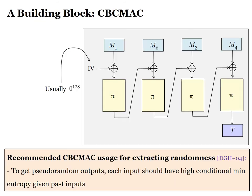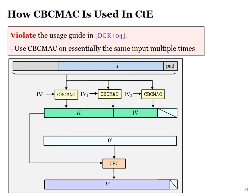As mentioned earlier, CTE is based on CBC-MAC as a building block. Conventionally, CBC-MAC uses the zero IV, but in CTE the IV is non-zero. A classical guide for using CBC-MAC as a randomness extractor comes from the work of Dodis et al. In particular, if you want pseudo-random outputs, each input should have high conditional min-entropy given the past inputs. This recommendation is, however, violated in CTE — CTE uses CBC-MAC on essentially the same input multiple times. This is one of the biggest challenges in analyzing security of CTE as a randomness extractor.